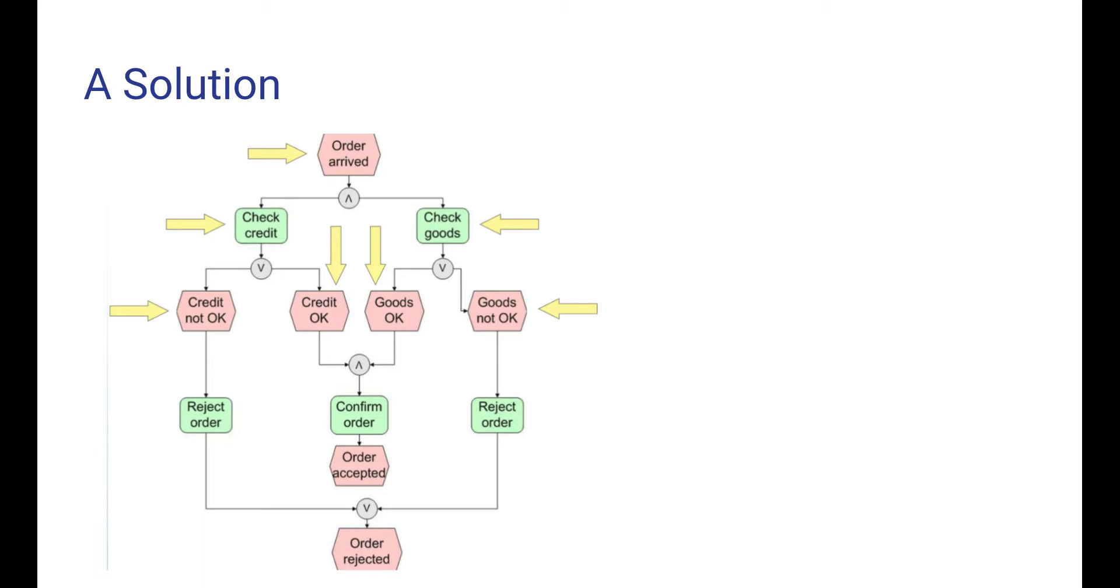But there is also a happy path where both credit and goods availability are fine and in this case we arrive at the AND join which allows the process to continue with confirm order where the process stops.